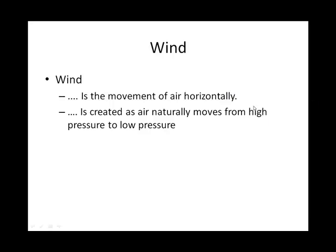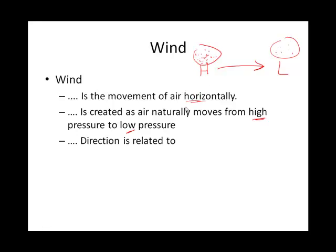Air moves from high to low pressure — from H to L. If you think of a parcel of air at high pressure and low pressure nearby, it wants to head toward the low. So what direction will wind blow? One of the main indicators of what direction wind will blow is what we call the pressure gradient force.